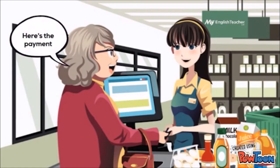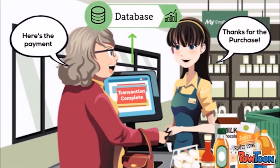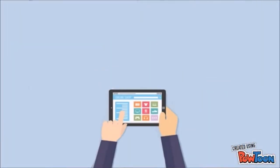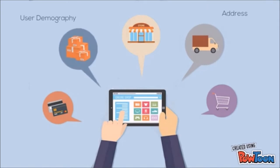In a grocery store, when a transaction is done, the data of the transaction is usually stored in the database of the system. The data stored inside the database is sometimes never fully utilized and is only archived for safekeeping. This not only happens in physical stores but also in e-commerce, which consists of more accurate data of the user, including user demography, address, payment method, and buying patterns.